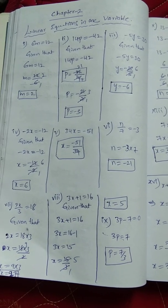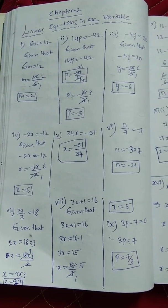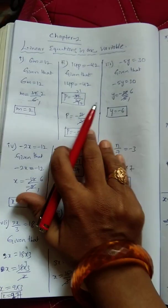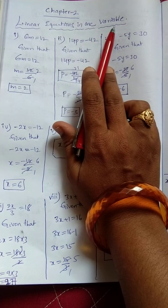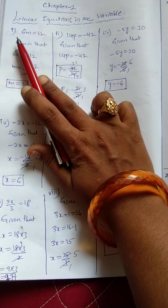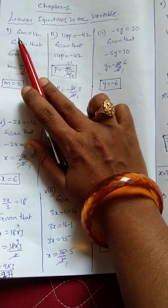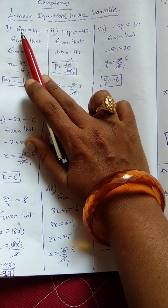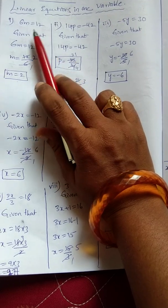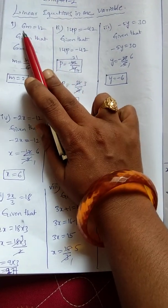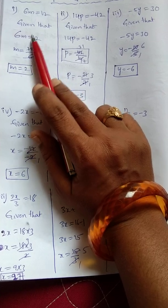Hi, hello, welcome to MathsGuru channel. In this video I am going to explain chapter 2, that is linear equations in one variable, 8th class math. First question: given a few bits, how to solve simple equations or linear equations in one variable. See, 6m equals 12 is given.